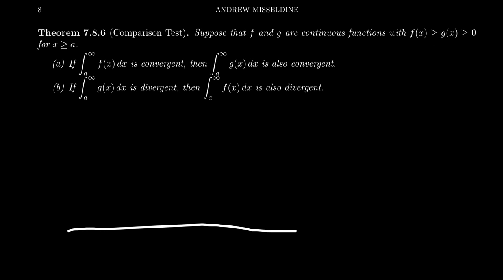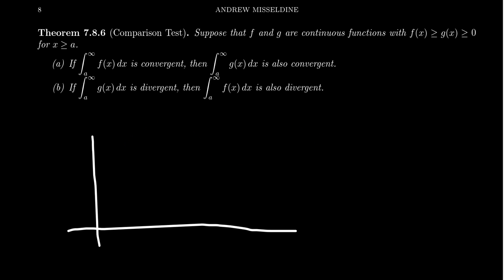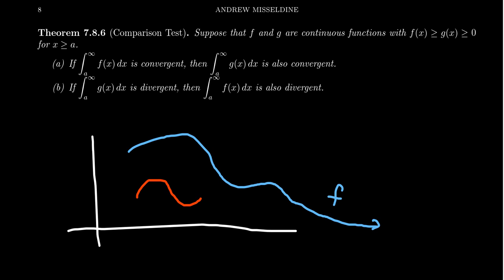So if we were to graph this, we're saying something like the following. f is this blue function right here, something like this. And then g might do something like the following, but g always sits below f. And this will be true as x is greater than or equal to a, as we see in this illustration.